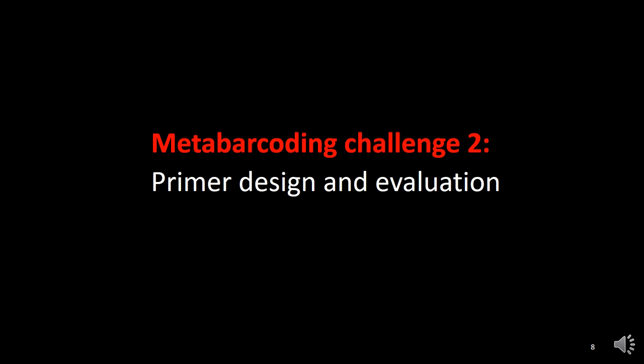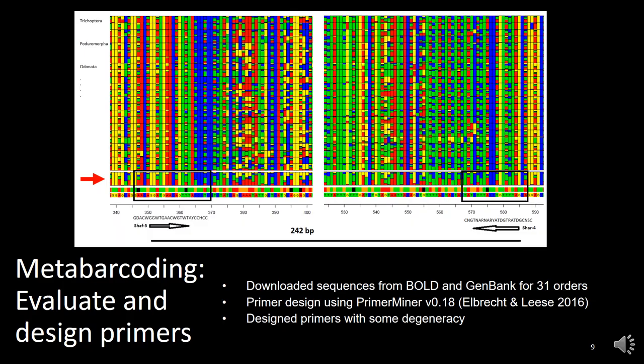Challenge two is primer design and evaluation, especially for a sample that's as diverse as ours, like you see here. After building my mock sample and knowing what I put inside in terms of the taxonomic groups, I went to BOLD and GenBank and downloaded all the sequences for each of these individual groups.